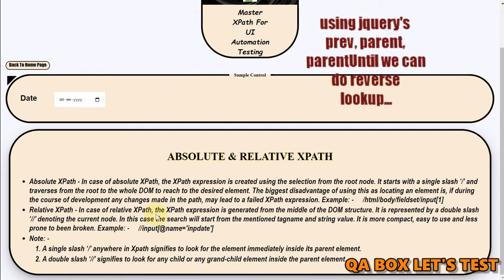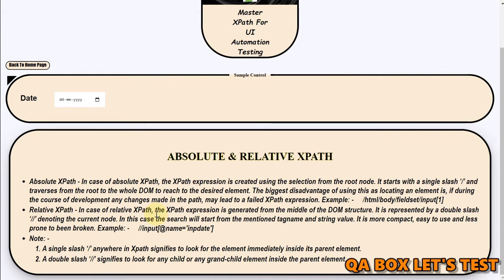Relative XPath is more compact, easy to use, and less prone to being broken. Because here you could see that we are not starting from HTML body fieldset. We are not mentioning anything of that sort here.